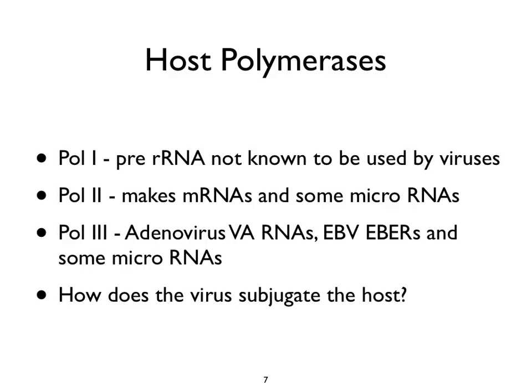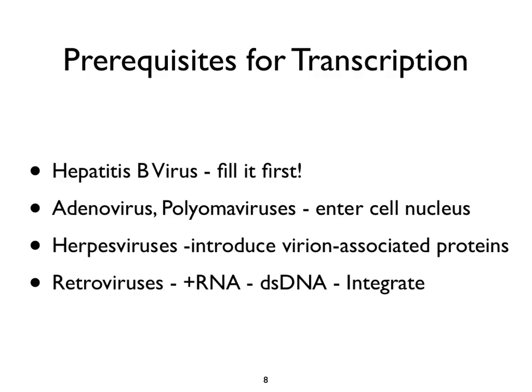How does the virus subjugate the host? The first thing the virus has to do is get its chromosome into the nucleus, because that's where the transcription apparatus is. If you're hepatitis B virus, you must change that incomplete molecule into a complete double-stranded DNA molecule—then it's seen by the host as a complete genome. Adenoviruses and polyomaviruses have their DNA enter the cell nucleus, resulting in certain sequences on virus chromosomes being readily accessible to the host transcriptional apparatus. At least one very early or immediate early gene is transcribed, leading to a cascade of virus gene regulation.